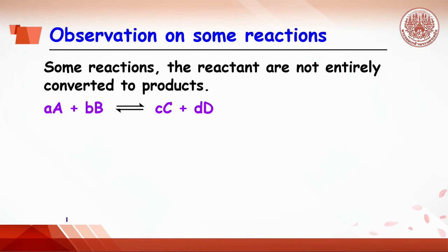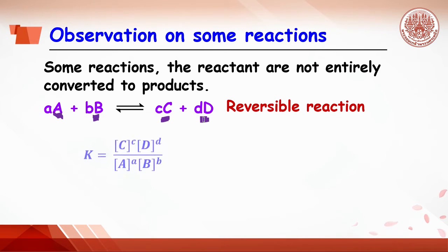For example, when A reacts with B to get products C and D, after some time, it is found that the ratio of concentration of products and reactants are constant, which is called equilibrium constant.